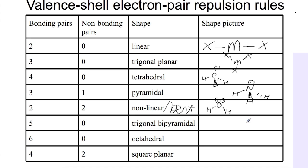If you have five bonding pairs and no non-bonding pairs, we have to try and get those five atoms as far away from each other as possible. We do this by making a trigonal bipyramid: two atoms are 180 degrees away from each other, and three atoms are all 120 degrees from each other and 90 degrees from the two axial ones. We call it a trigonal bipyramid because we have two pyramids formed by the equatorial plane and the axial atoms at top and bottom.